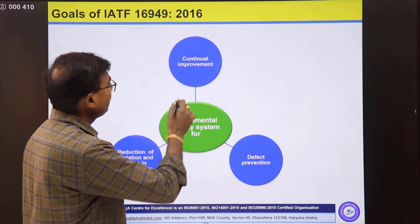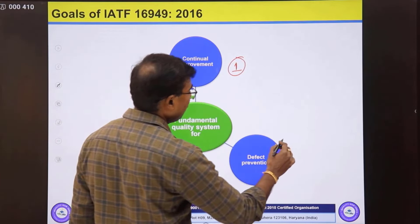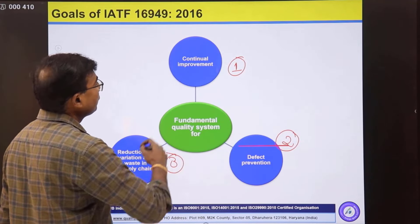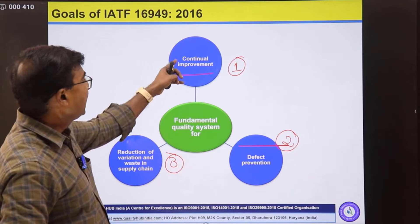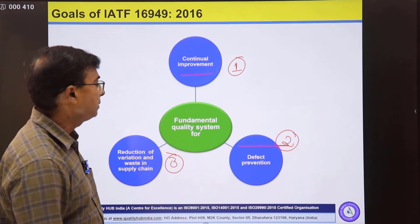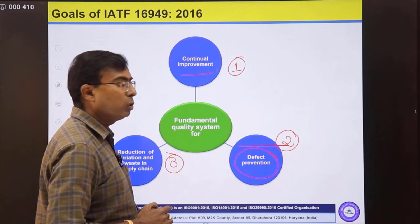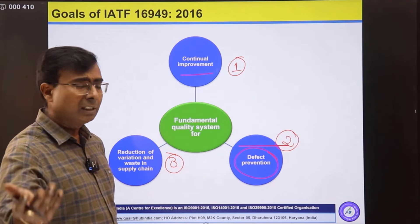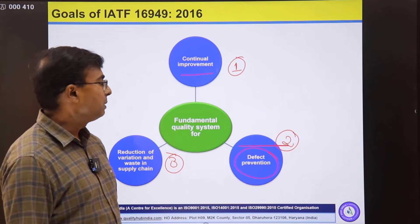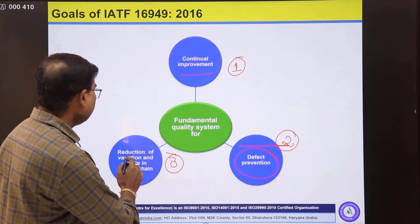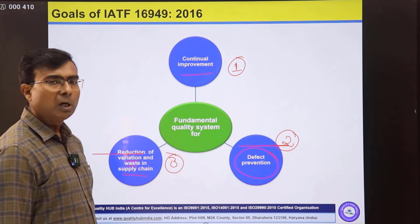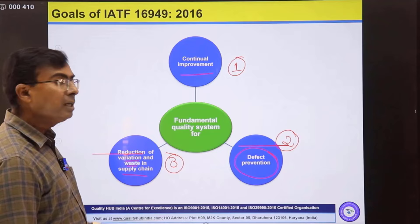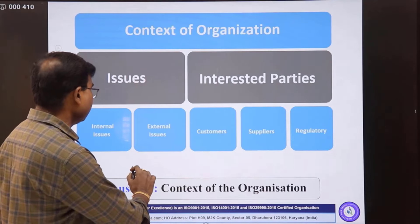The goals of IATF 16949 are: first, continual improvement; second, defect prevention; and third, reduction of variation and waste in the supply chain. Organizations implementing IATF 16949 must make continual improvement in their processes. The focus is on prevention rather than corrective action — designing a good system that prevents defects. Reduction of variation and waste indirectly refers to Six Sigma and lean aspects, which the organization should also be practicing.